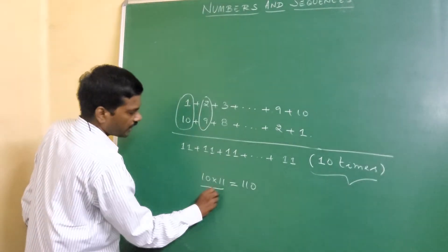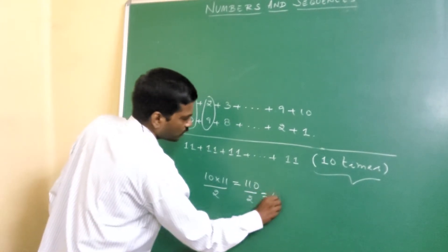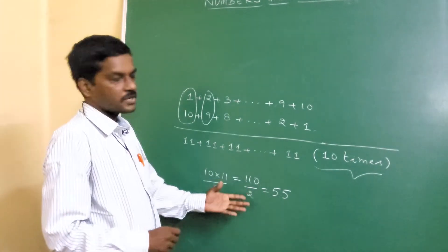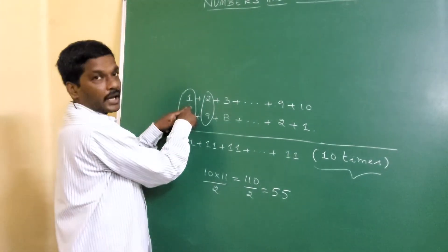Then divide by 2. So one of the easiest techniques to add natural numbers.